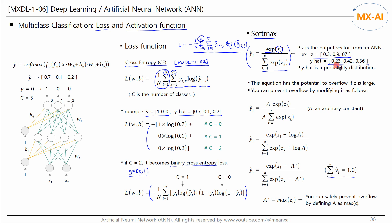That is, the probability that the class of the input data is 0 is 0.23, the probability that the class is 1 is 0.42, and the probability that the class is 2 is 0.36. We predict the class to be 1 because it is most likely. If we take argmax of Y-hat, it's 1.